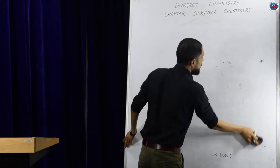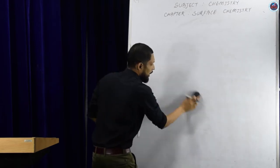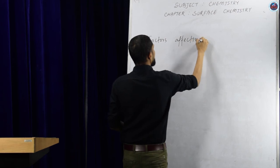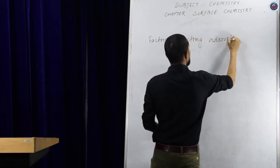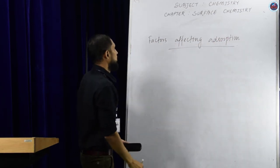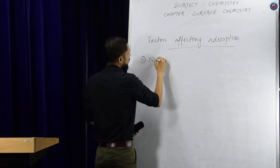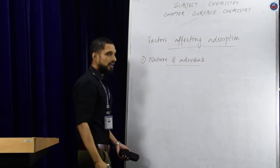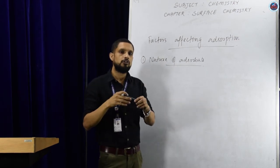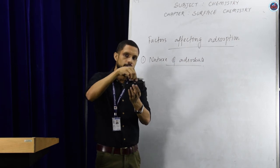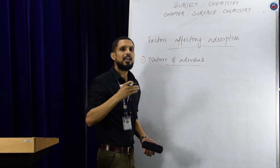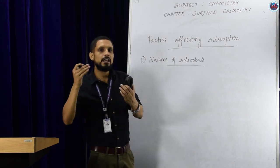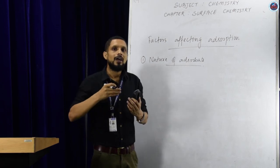Next, we will study the different factors affecting adsorption. The first factor is the nature of adsorbate. When we consider the adsorption of gaseous molecules on a solid surface, we check the liquefiable property. Gases which are easily converted to liquid form are good adsorbates.